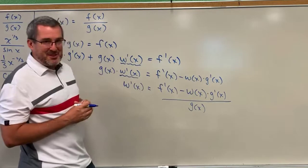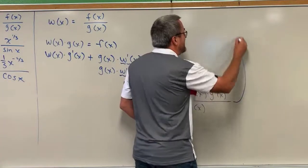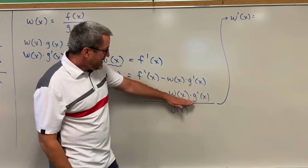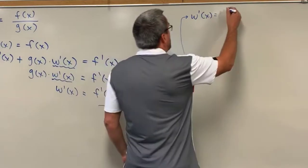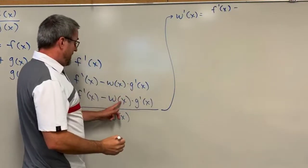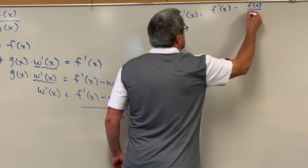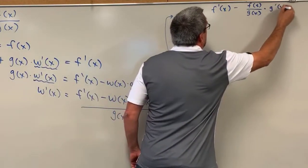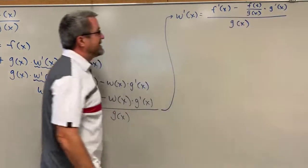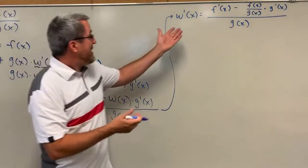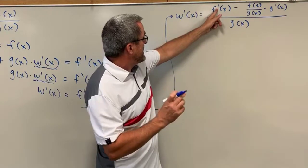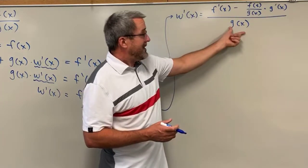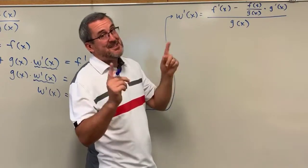One could conclude that the derivative of the quotient f of x divided by g of x is found by taking the derivative of the numerator, subtracting that rational function times the derivative of the denominator, and dividing that difference by the denominator. However, we're going to clean it up just a little bit by applying two more algebraic maneuvers. We're going to replace w of x with its rational expression, f of x divided by g of x, multiplied by g prime of x, all divided by g of x. We could leave it like that, but it's still a little bit messy.